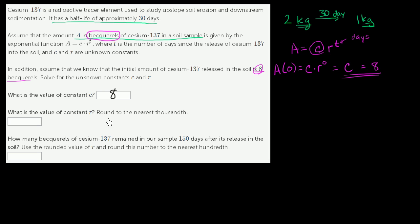What is the value of the constant R? Round to the nearest thousandth. So we're starting with 8, so A of 0 is 8. How much are we going to have after 30 days? I'm picking 30 days because that is the half-life of cesium-137.